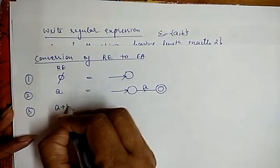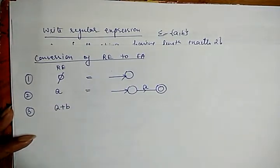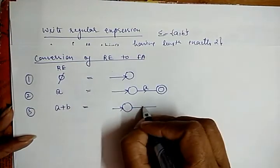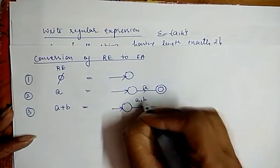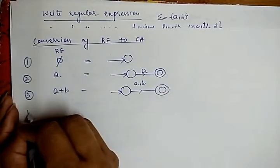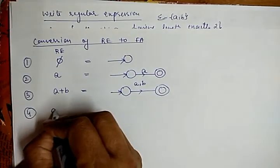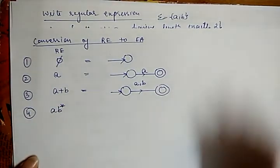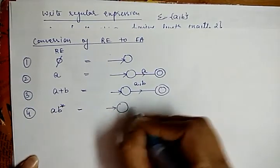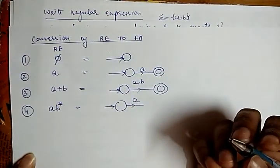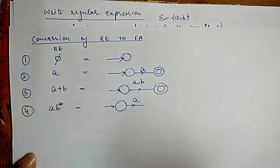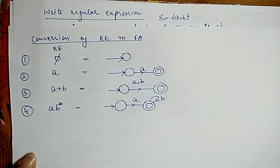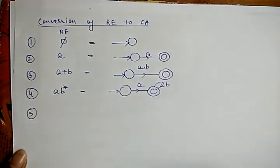Third example: for the regular expression a+b, the language is {a, b}. The finite automata has an initial state, transitions on 'a' or 'b', and a single final state. Fourth: for the regular expression ab*, the language starts with 'a' and then any number of b's. The finite automata has an initial state, transitions on 'a' to a final state, and a self-loop on 'b' at the final state.